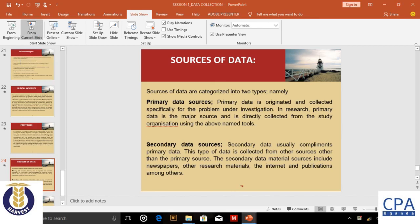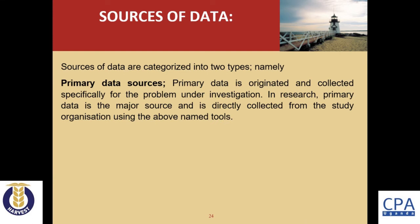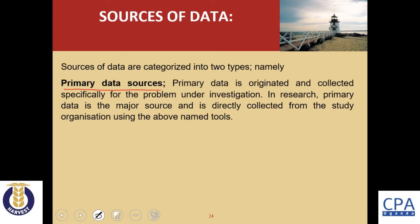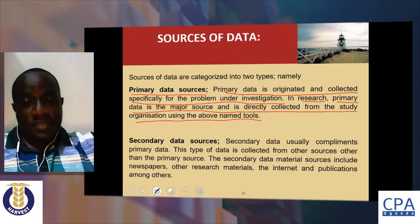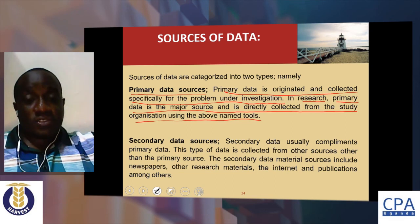Moving to the sources of data: sources are categorized into two types — primary and secondary. Primary data is original in character and collected for the very first time. Primary data is originated and collected specifically for the problem under investigation. In research, primary data is the major source and is directly collected from the study organization using tools such as questionnaires, interviews, and observation.